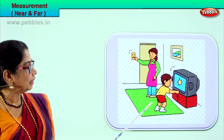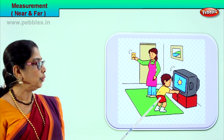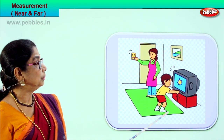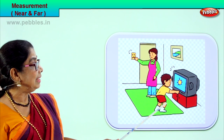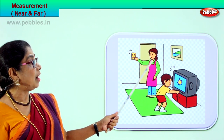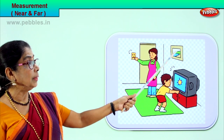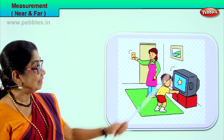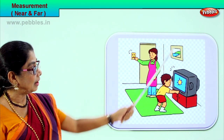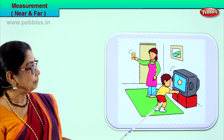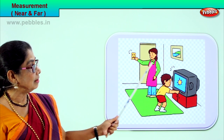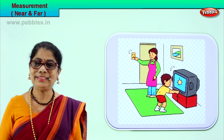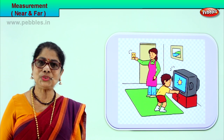Look at this lovely picture. Can you see a little boy? He is trying to put on the TV - he is near you. And mummy is far away, nearly at the door. The baby is near, mummy is far. Near and far.